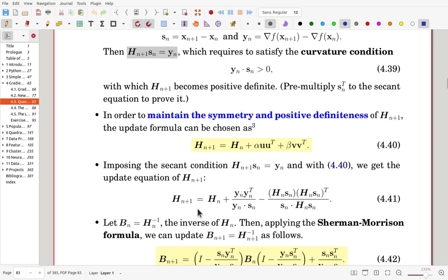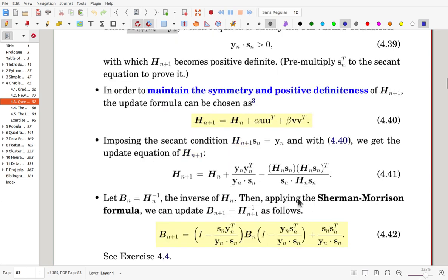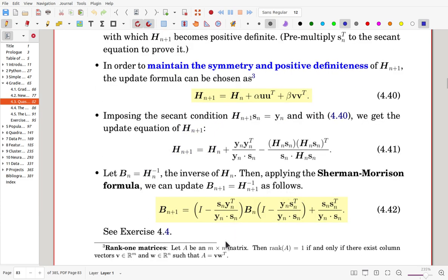One more reason we start with this form for Hn+1 is now we can apply the Sherman-Morrison formula to get its inverse. Once it is given in this way, then by using the formula, we can get its inverse. Here, let Bn be inverse of Hn.